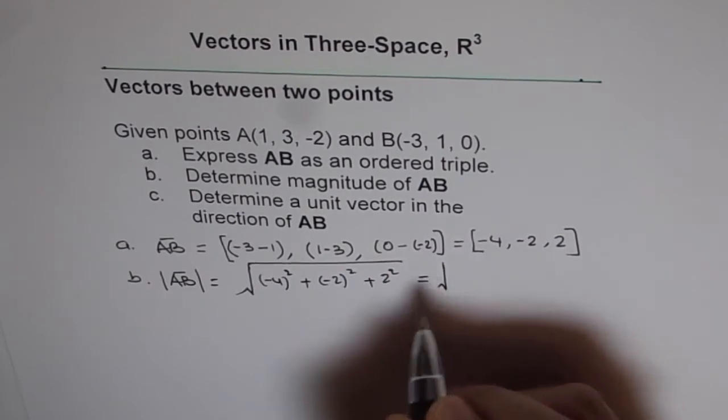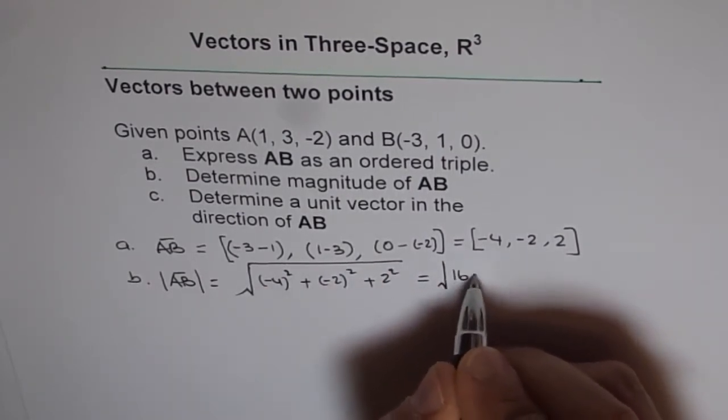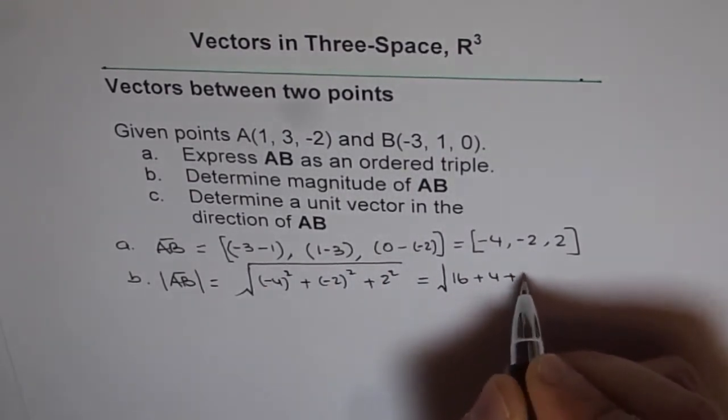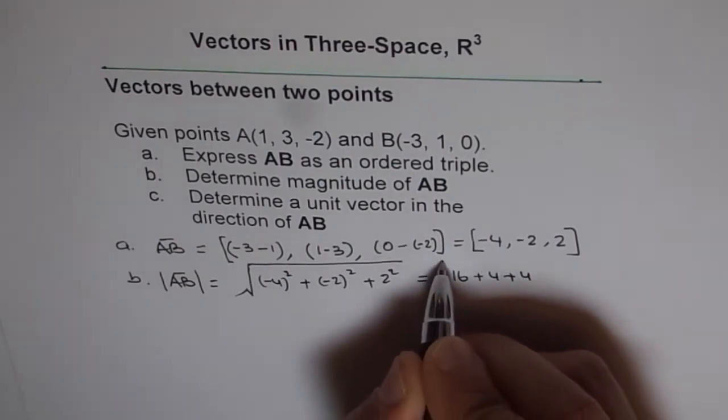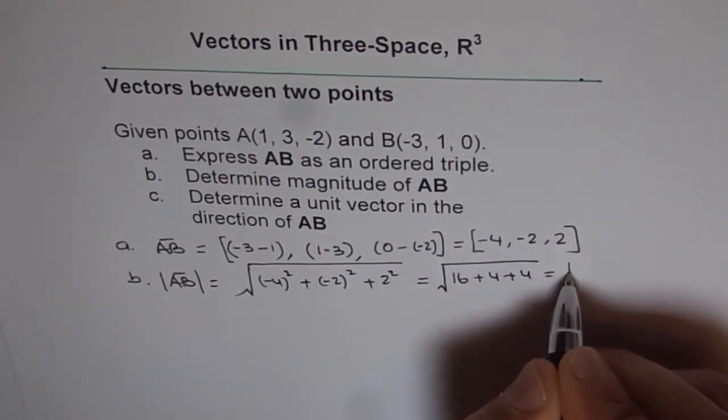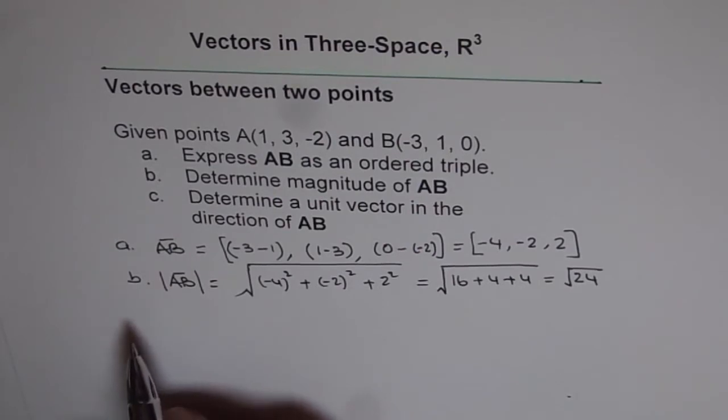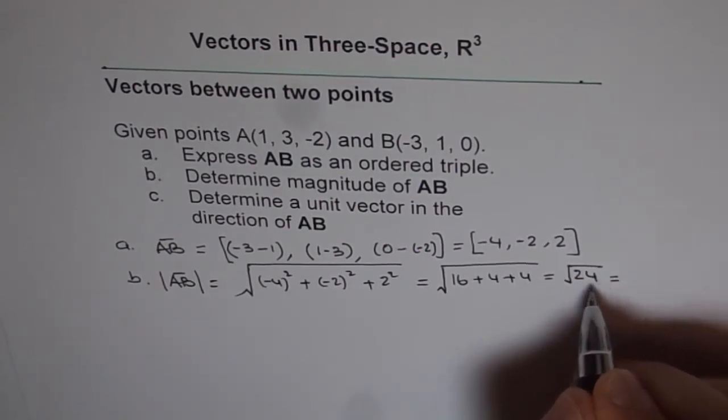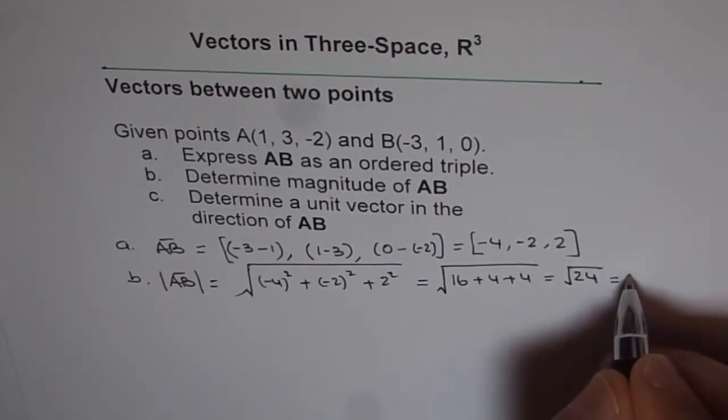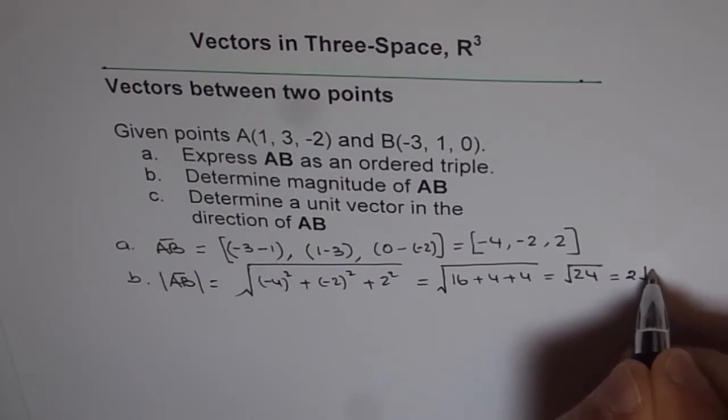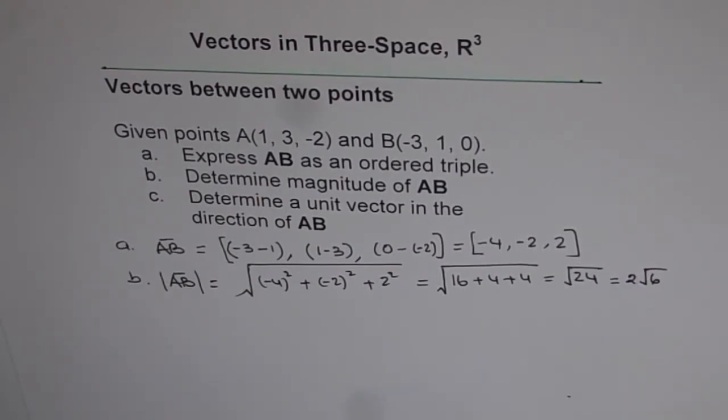And that gives us square root of 16 plus 4 plus 4. And that is square root of 24. So that gives us the magnitude of vector AB, which could be written as, this is 6 times 4, so I can write this as 2 square root 6.